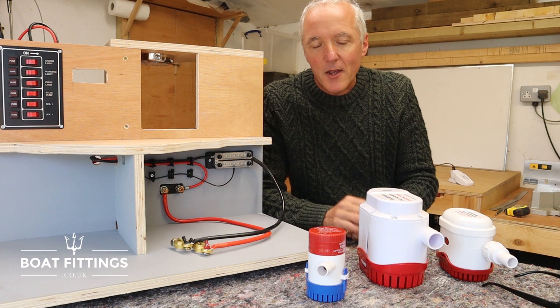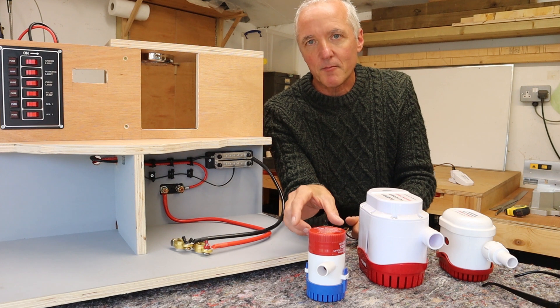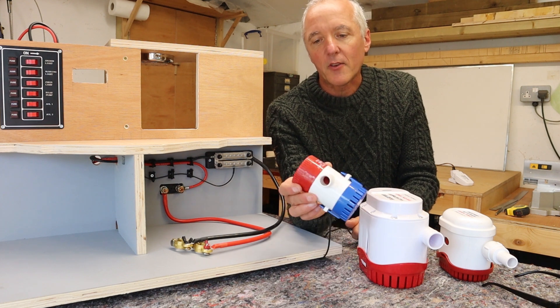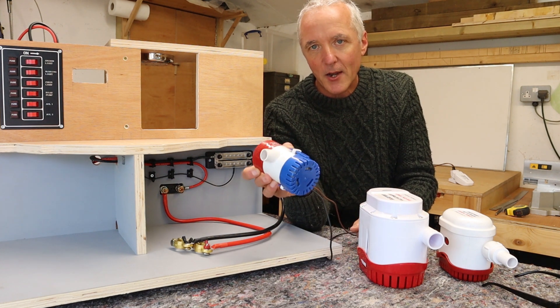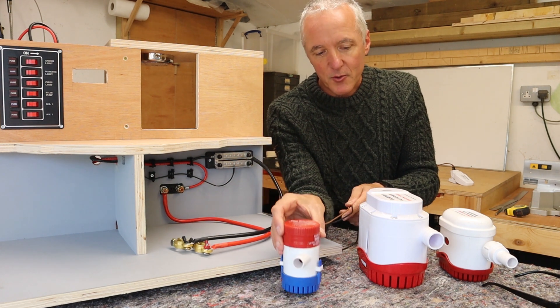In this part three we're looking at bilge pumps. So we've got three different kinds of bilge pumps here. This is about as simple as you can get - it's a manual bilge pump with two wires, 12 volts, simply an on or off bilge pump.